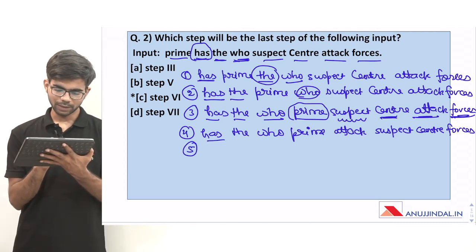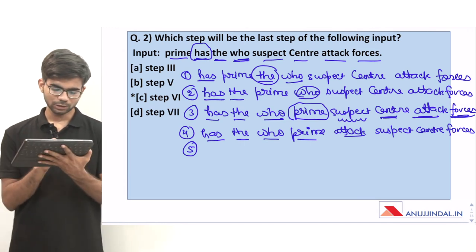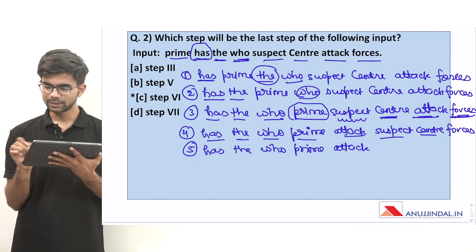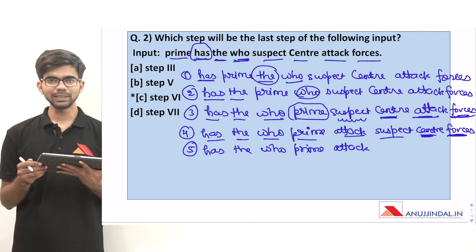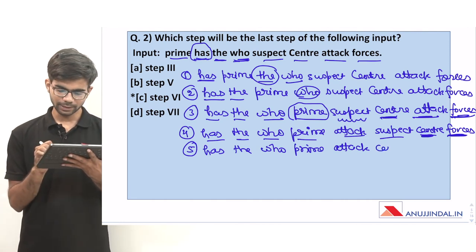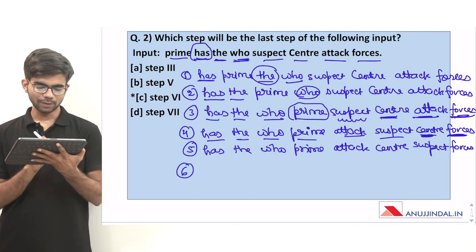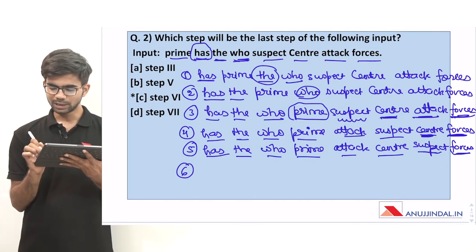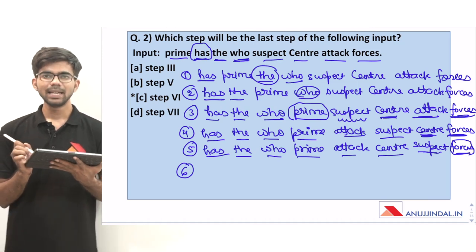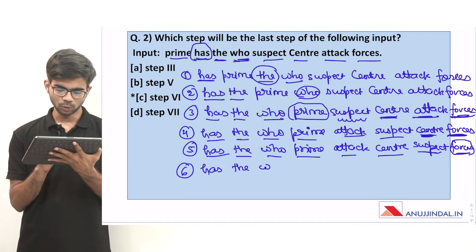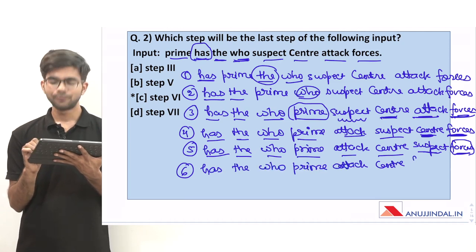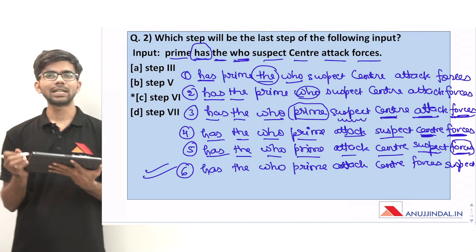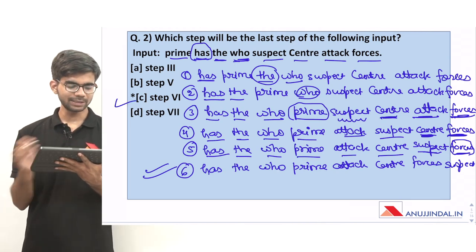For step 5, we have 5 words arranged. From the remaining 3 words, between 'center' and 'forces', 'center' comes first because C comes before F. Step 5 is: has, the, who, prime, attack, center, suspect, forces. For step 6, between 'suspect' and 'forces', 'forces' has 6 letters and 'suspect' has 7, so 'forces' comes next. Step 6 is: has, the, who, prime, attack, center, forces, suspect. After 6 steps we have our output. The correct option is option C, step 6, because step 6 is the last step.